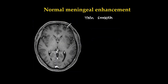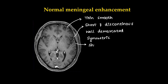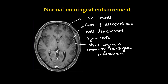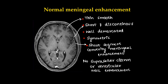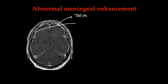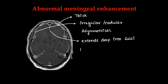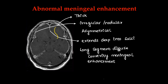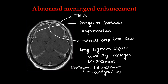The meninges contain blood vessels and normally do enhance on contrast-enhanced CT and MRI. Normal meningeal enhancement appears as thin, smooth, short and discontinuous, well-demarcated symmetric enhancement with short segment convexity of less than 3 cm in continuity. There will be no suprasellar cistern or ventricular wall enhancement associated with normal enhancement. In cases of abnormal meningeal enhancement, there will be thick, irregular, nodular or asymmetrical enhancement extending deep into the sulci, with long segment diffuse convexity meningeal enhancement greater than 3 cm, or meningeal enhancement for 3 contiguous segments on 1.5 tesla MRI.